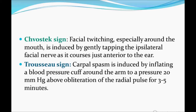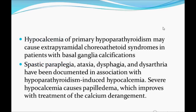There are two important signs: Chvostek's sign and Trousseau's sign. Chvostek's sign: facial twitching, especially around the mouth, induced by gently tapping the ipsilateral facial nerve as it courses just anterior to the ear — C comes first, so it's on the face. Trousseau's sign: carpal spasm induced by inflating the blood pressure cuff around the arm to a pressure 20 mmHg above obliteration of the radial pulse for 3 to 5 minutes.